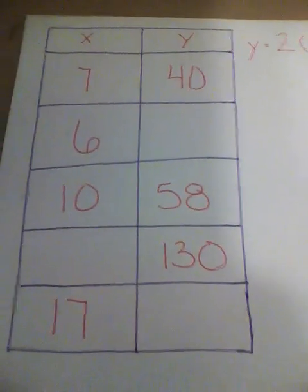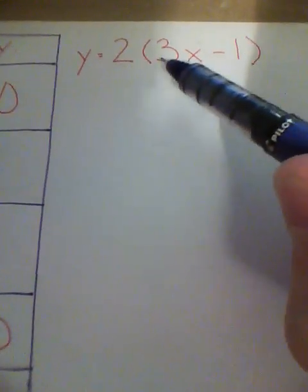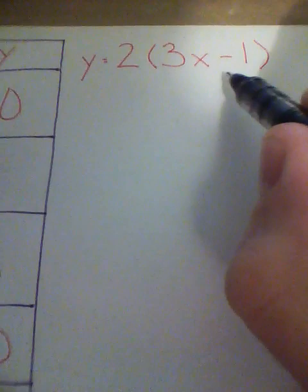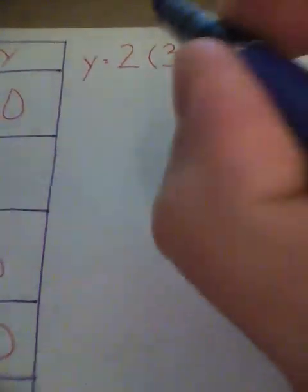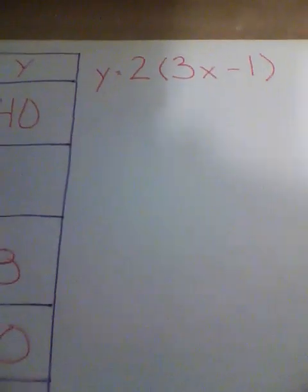Looking at this table doesn't help me unless I see the function, so I take a look at the function here. It is Y equals 2 times 3X minus 1. This looks like I could use a distributive property because inside the parentheses there's nothing I can combine. These are not like terms, so I would distribute or share that 2 with everything inside the parentheses.